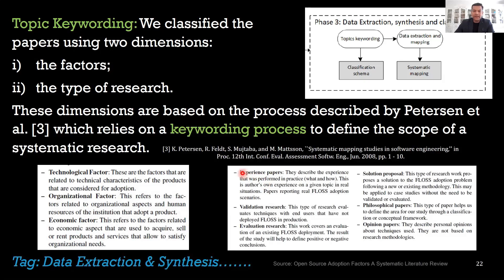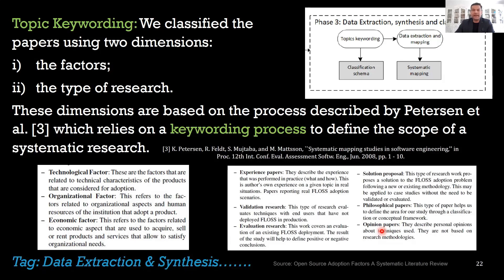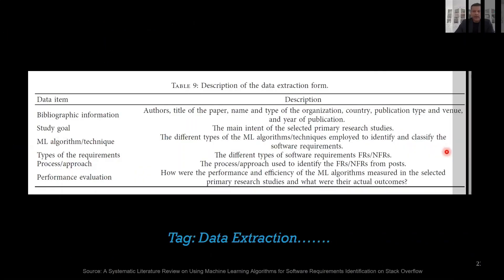When looking into the types of papers in their collection, they categorized them into experience papers, validation research, evaluation research, solution proposal, philosophical papers, and opinion papers. Different types of papers were used because a specific type might help answer some aspect of the research. It is not necessary that all research questions would be answered from a single paper — research question one and two might come from one type of paper, while research question three came from a different paper. Whether to include opinion papers or editorials depends on the research being done.